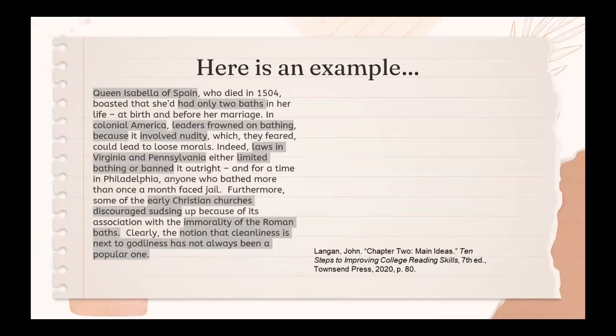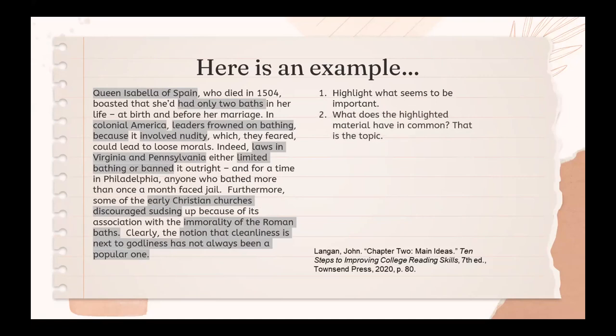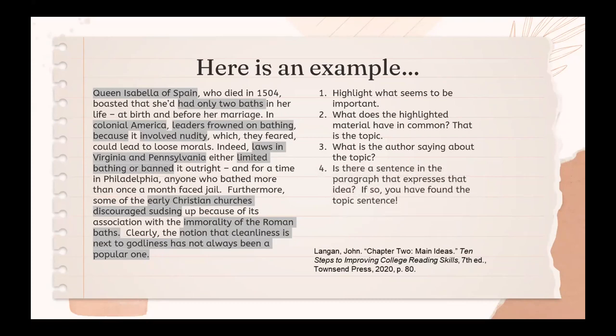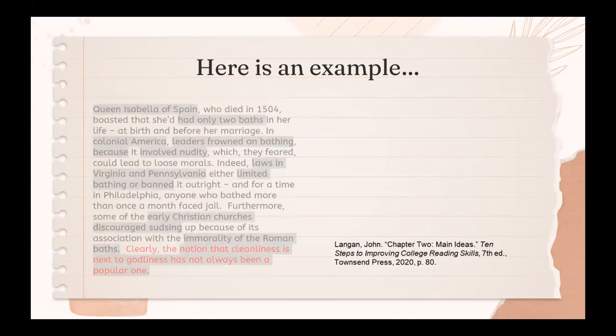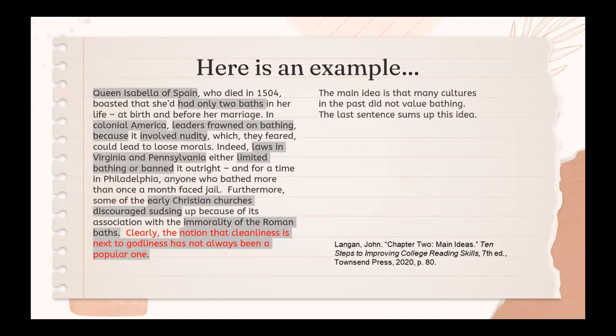After highlighting what seems to be important, it looks like all the highlighted material is about a lack of bathing — lack of bathing seems to be the topic. What is the author saying about lack of bathing? Is there a sentence that ties it all together, covering the idea of lack of bathing at many points in the past? If so, you've found the topic sentence. The main idea sentence is the last sentence: 'Clearly, the notion that cleanliness is next to godliness has not always been a popular one.' It's a good topic sentence because it covers all the times in the past when people did not value bathing. Almost makes you want to time travel, doesn't it?